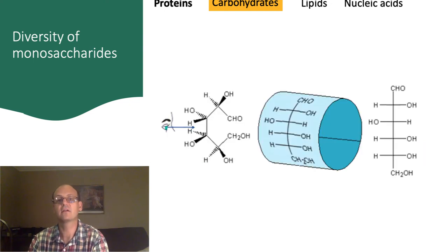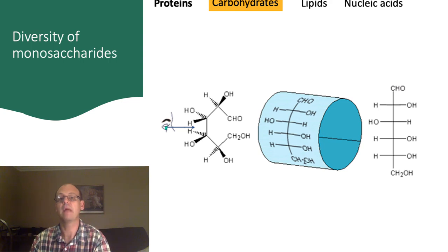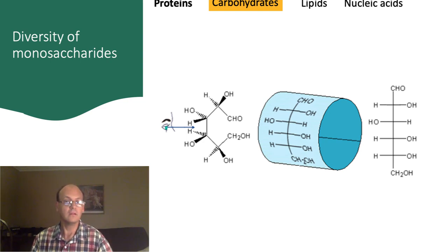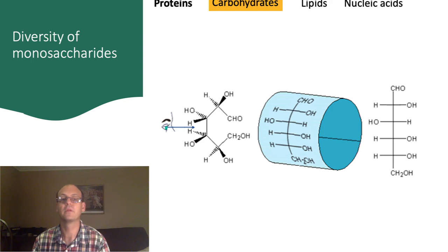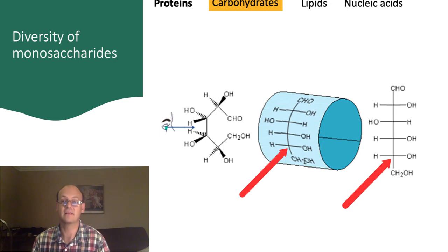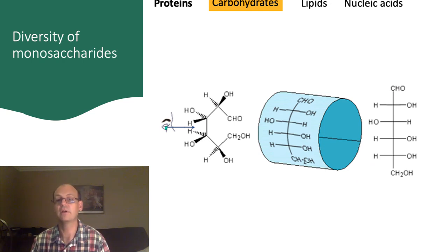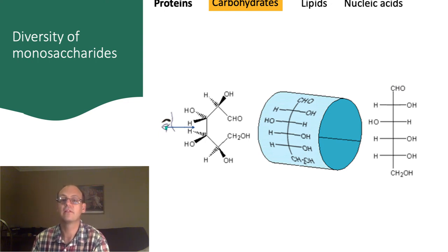Just for practice, let's look at one more sugar. We put the carbonyl group at the top of the page and rotate it backwards into the paper. Each of the horizontal groups is coming out of the paper toward the eye. Look for the last chiral carbon and determine if it's an L or D sugar. You should be able to identify the marked carbon atom as the last chiral carbon — note that the next carbon down the chain has two hydrogen atoms attached and is therefore not chiral. This is another D sugar because the OH group is on the right.